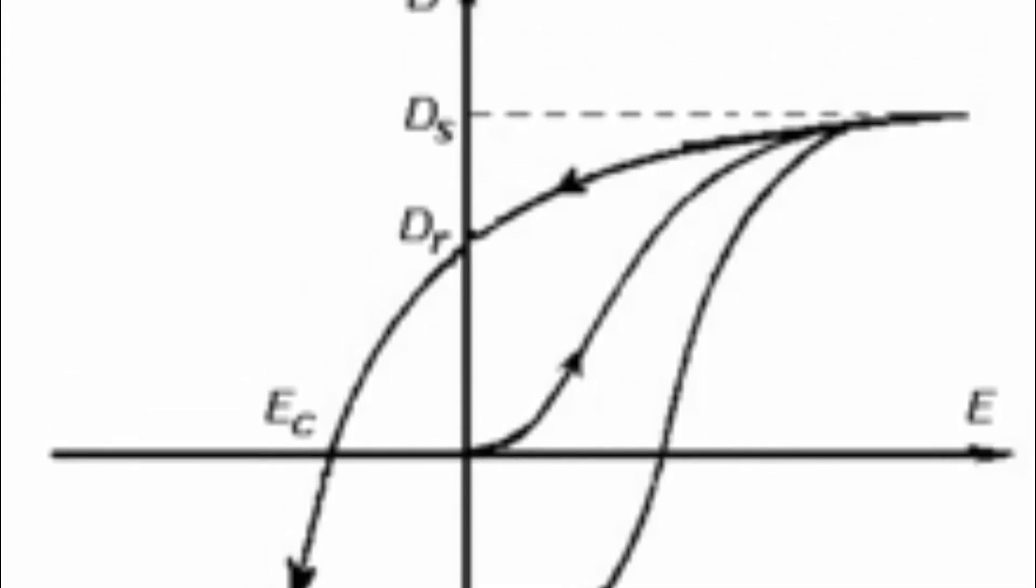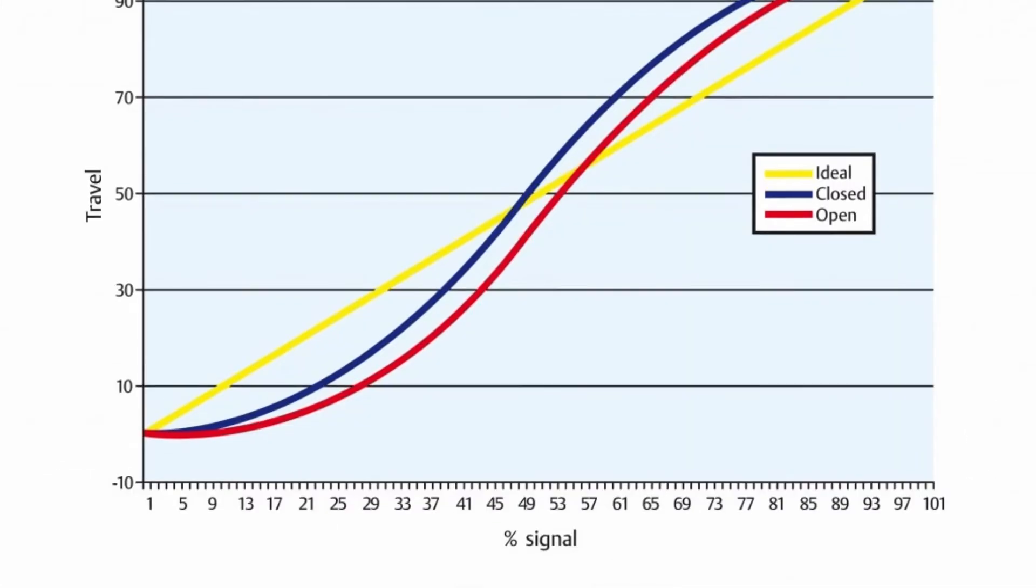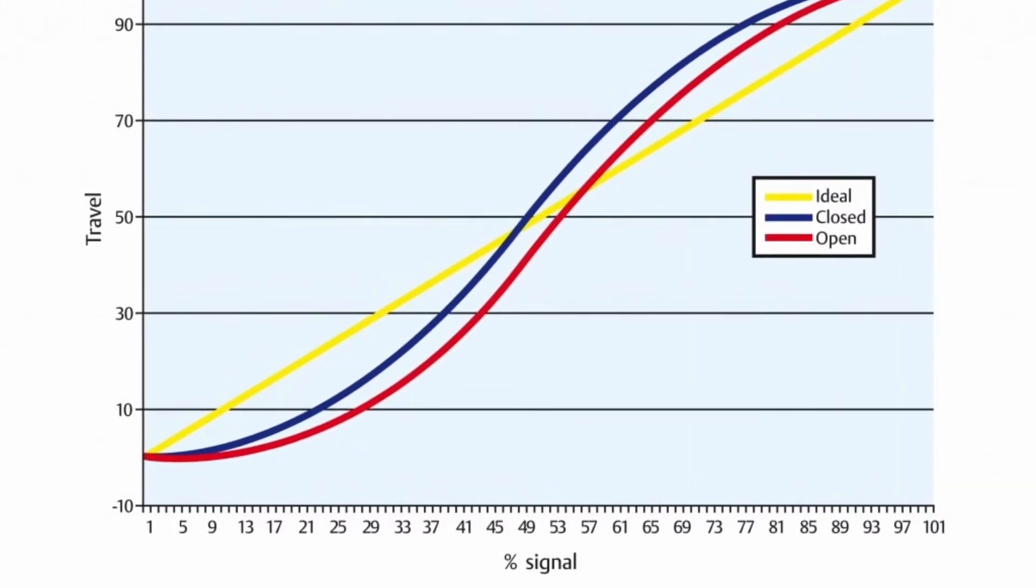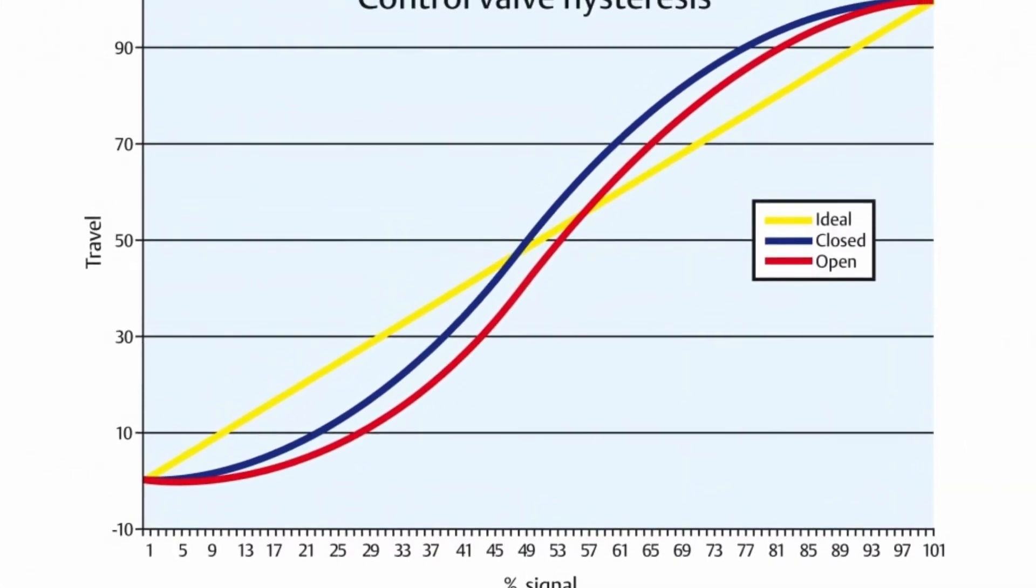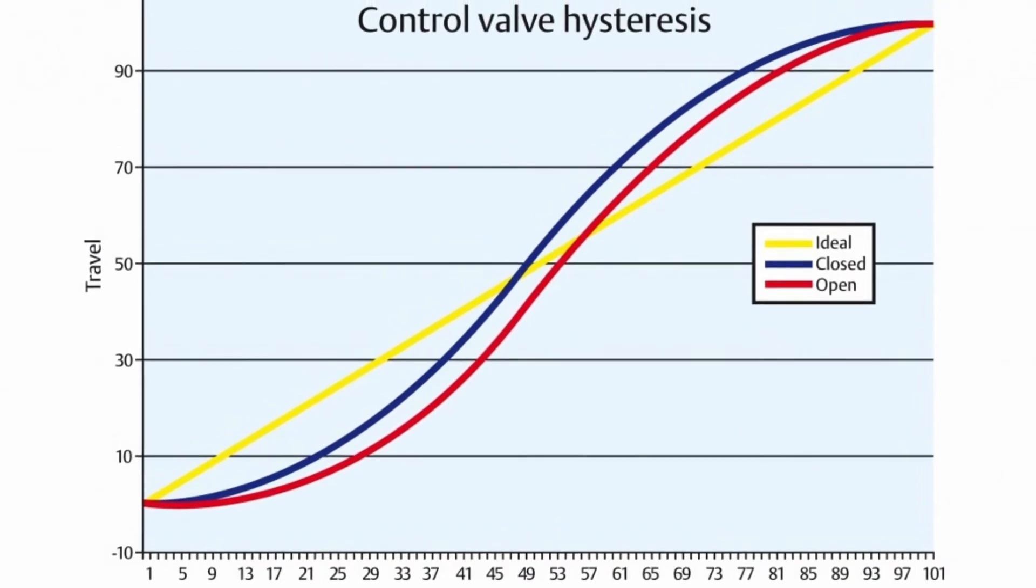Hysteresis can be a dynamic lag between an input and an output that disappears if the input is varied more slowly. This is known as rate-dependent hysteresis.